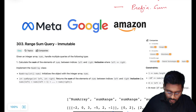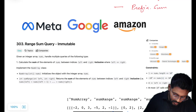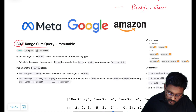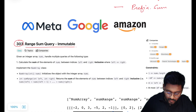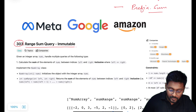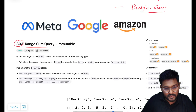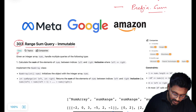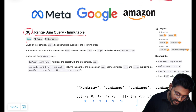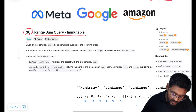Hey everyone, welcome to Code Harmony. Today we will be solving LeetCode 303 Range Sum Query Immutable. This problem has been asked in companies like Meta, Google and Amazon. It's a data structure design problem based on the concept of prefix sum. It's marked as easy but it's going to teach us a very good concept. Let's have a look at the problem statement.